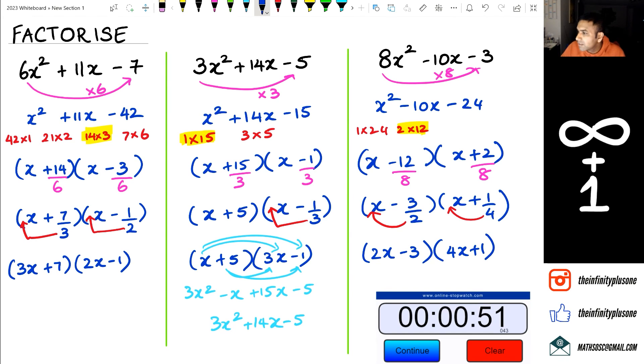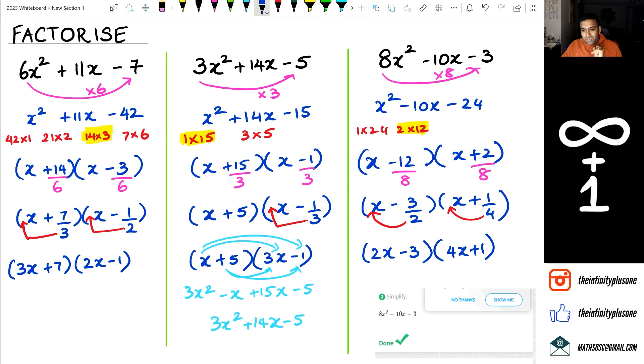All right let me just check okay so as you guys can see there that's what my final answer was when I was playing around with Cymat and if I go right to the top 2x minus 3, 4x plus 1.